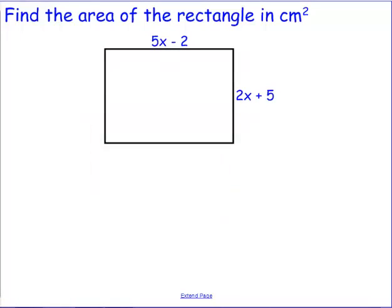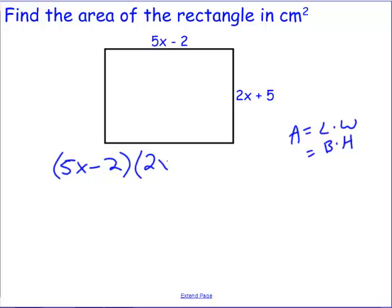It might make you apply it in different ways, for example if I asked you to find the area of a rectangle in centimeters squared. Notice we have a length of 5x minus 2, a width of 2x plus 5. Remember, variables just stand for some unknown number, we still know that area equals length times width or base times height. So we are going to take 5x minus 2 as a binomial and multiply it times 2x plus 5.